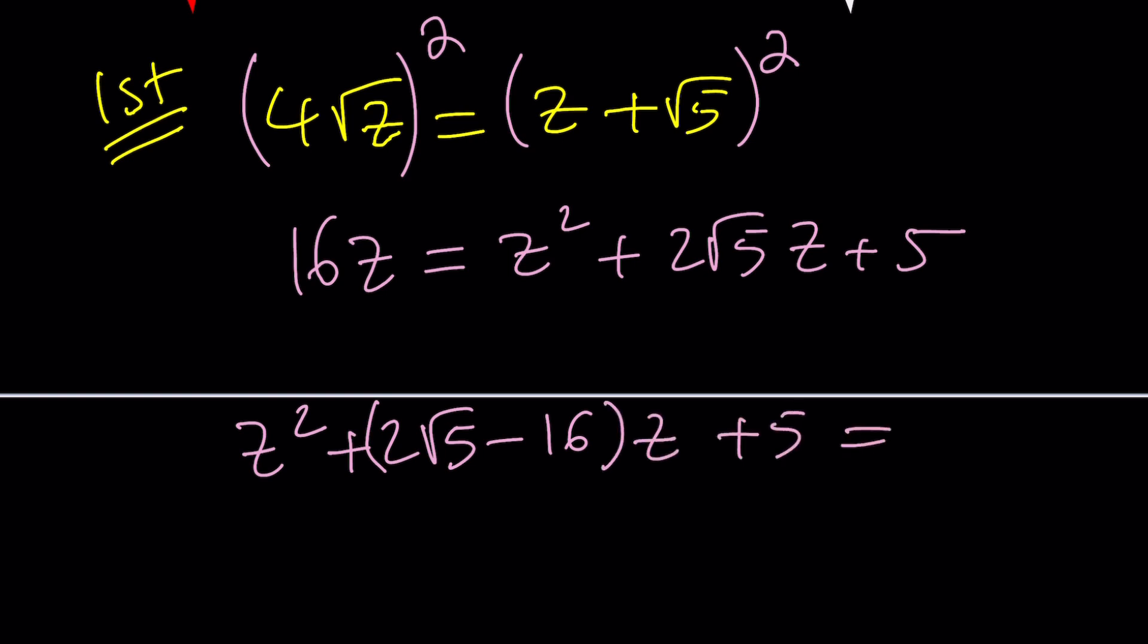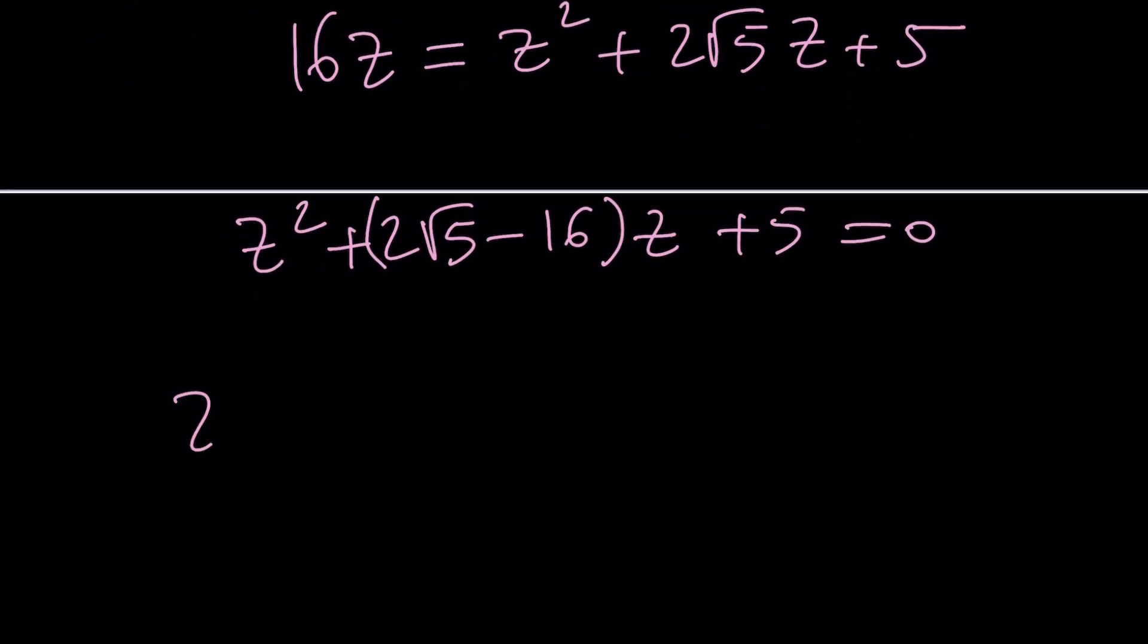z is going to be -b, which is this, ± √(b² - 4ac), which is -20, all of that is divided by 2a.